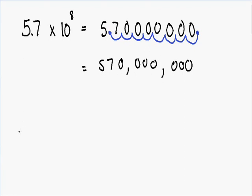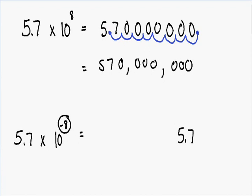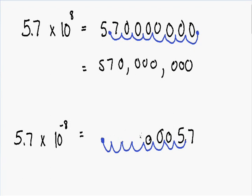Now let's go over an example with a really small number. Let's say we have 5.7 times 10 with a negative 8 exponent. Many people think when they see this negative exponent that the answer is going to be negative — but that is completely wrong. This negative exponent just means that we have a really small number and we're going to move our decimal point to the left. So we have the number 5.7 and we need to move the decimal point 8 times to the left: 1, 2, 3, 4, 5, 6, 7, 8. We need to fill in zeros in all of the empty spaces, and our final answer is 0.0000000057.